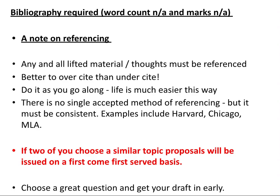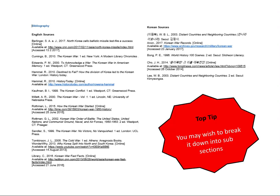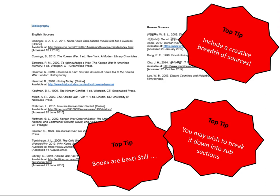For my students: if two of you choose a very similar topic, I'm going to issue the topic on a first-come, first-served basis — so choose a great question and get your draft in early. Here's an example of a bibliography. You might want to break it down into subsections such as digital resources, textual resources, articles, internet resources, or if it lends itself to it, primary versus secondary sources, or English versus non-English sources. Remember, books are still best. And try to be creative in your sources — I've had students interview survivors in the past and put transcripts of their testimony in, so always try to include a creative breadth of sources.